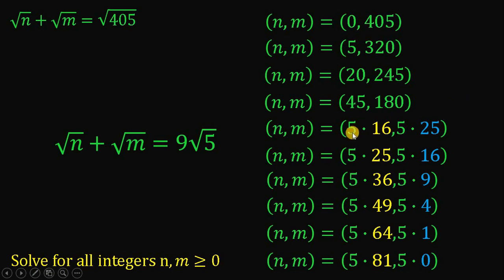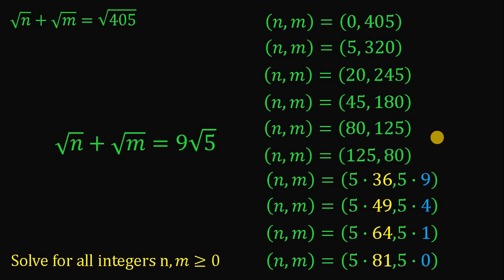Again, let's continue. 5 times 16 comma 5 times 25 is just 80 comma 125. Now, if we keep going, we get all possible pairs of n comma m.